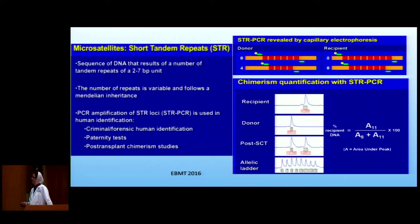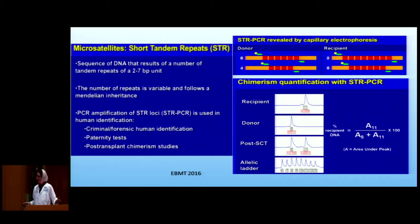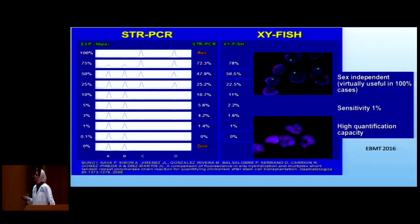STR involves multiple DNA sequence repeats that differ in numbers — like fingerprints, used in forensic medicine, and also used for us to distinguish donor from recipient. For example, a donor may have 6 and 4 repeats, and the recipient 8 and 6. With PCR and calculating the area under the curve, we can determine how much is recipient versus donor. This is an example post stem cell transplant: you have the combination of two, and we calculate the recipient percentage from the areas under the curve.